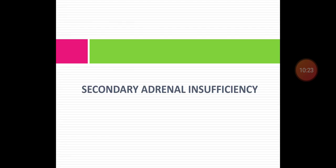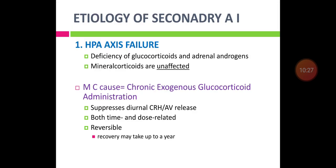In secondary adrenal insufficiency, the cause is hypothalamo-pituitary-adrenal axis failure, with deficiency of glucocorticoids and androgens but mineralocorticoids are unaffected. The most common cause is chronic exogenous glucocorticoid administration, which causes suppression of diurnal CRH-AVP release. This suppression is both time- and dose-related, and the HPA axis suppression is reversible, but it can take up to a year to reverse.